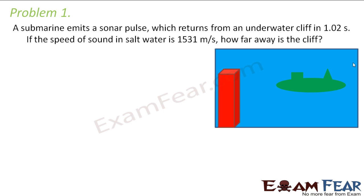It says a submarine emits a sonar pulse which returns from an underwater cliff in 1.02 seconds. If the speed of sound in salt water is 1531 meters per second, how far away is the cliff? A cliff is a kind of a hill. So in this case, let us suppose if you have a cliff and you have a submarine — we have to find out the distance between the cliff and the submarine.